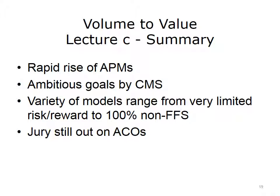This concludes Lecture C of Volume to Value. In summary, this lecture provided an understanding of some of the details and concepts that underlie alternative payment models in Category 3 and 4 of the HHS payment taxonomy. These alternative payment models, especially through ACO models, are catching on quickly for both CMS and private sector programs. CMS has ambitious goals—50% of Medicare providers with risk contracts by 2018. A variety of models range from very limited risk and reward to 100% non-fee-for-service. It is not yet clear whether accountable care organizations will have a big effect on bending the cost curve.